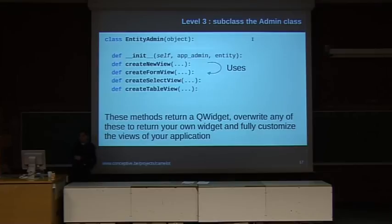The next level of customization is by subclassing the entity admin class that specifies how all forms and tables are presented to the user. It has methods which create the forms, table views, and select views. You can simply overwrite those functions and fully customize how your table or form should look like. I have no example of this since I've never done so myself.